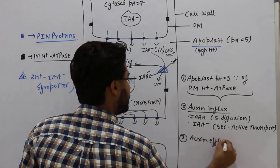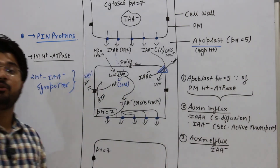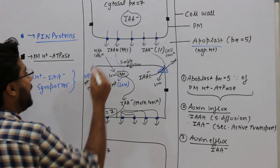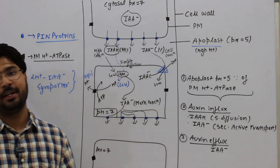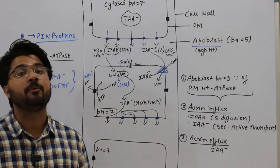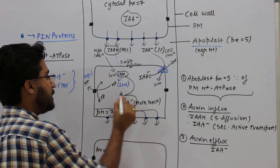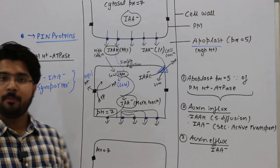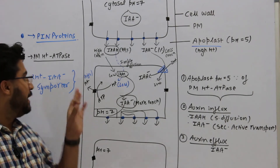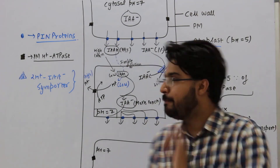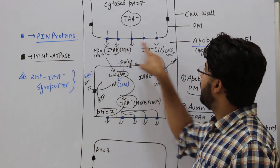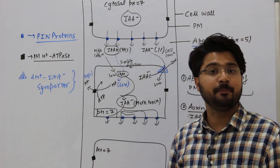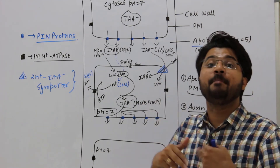Third, auxin efflux always occurs in the IAA⁻ form. If asked which form dominates in the apoplast, the answer is IAAH, because the apoplast is a protonated environment. The dominant form inside the cytosol is IAA⁻. Three proteins play a crucial role: PIN protein (at base of cell for efflux), plasma membrane H⁺-ATPase (maintaining pH difference), and 2H⁺/IAA⁻ symporter (for IAA⁻ influx).